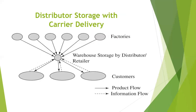Another method is distributor storage with carrier delivery. Here, customers place their order information to the retailer, and the retailer passes this information to the distributor. The distributor has a warehouse where, beforehand, products from different manufacturers and different places are delivered and stocked up. From this warehouse, the distributor packs the products and delivers them directly to the customer's place. This is distributor storage with carrier delivery.